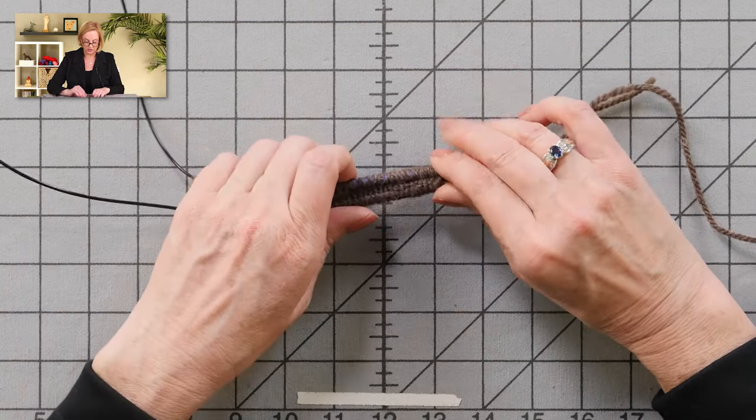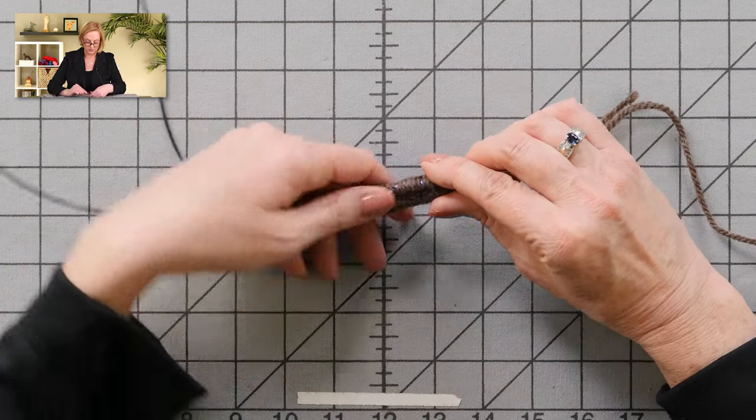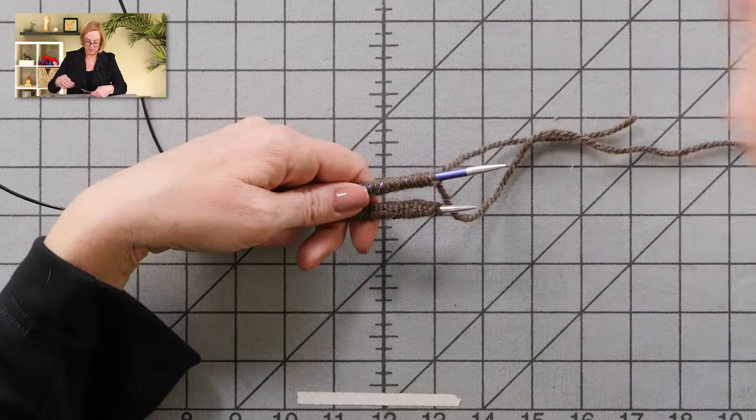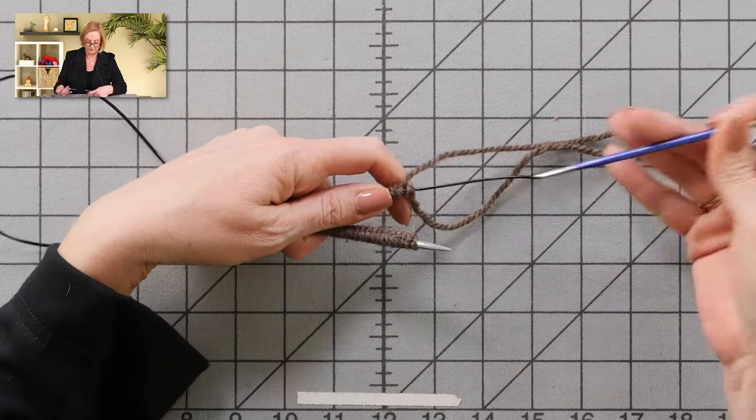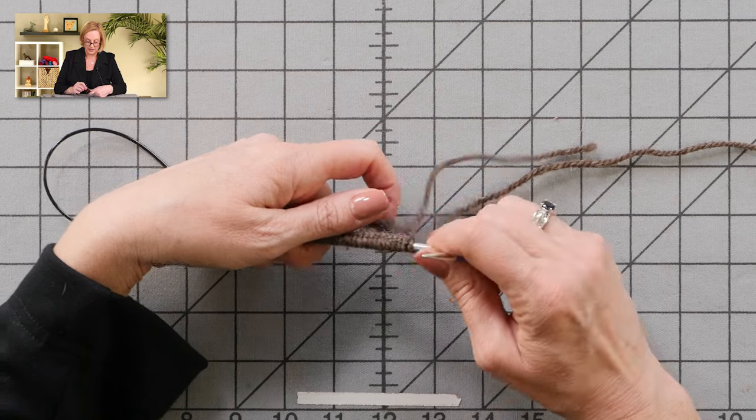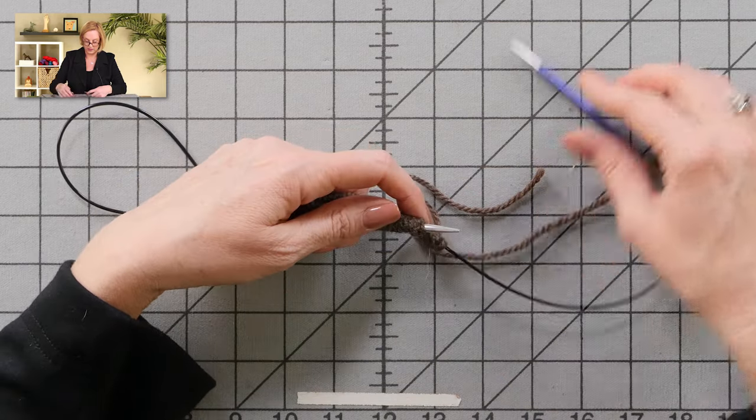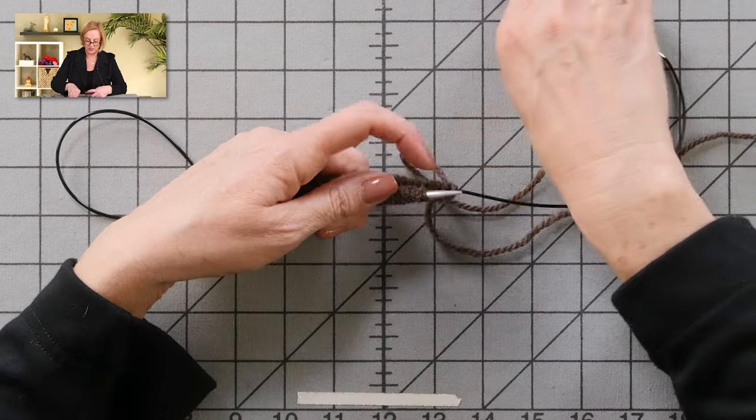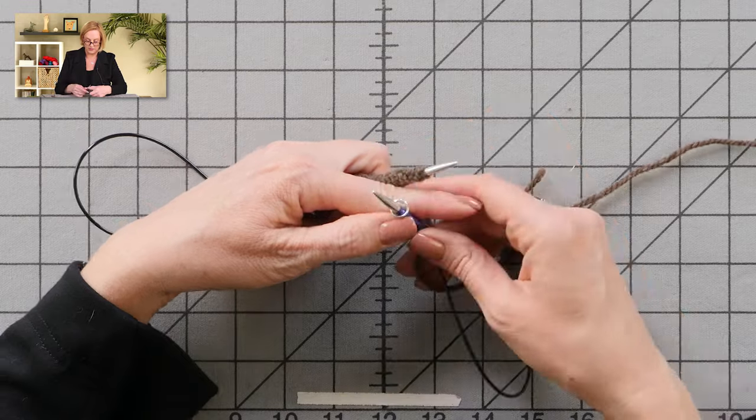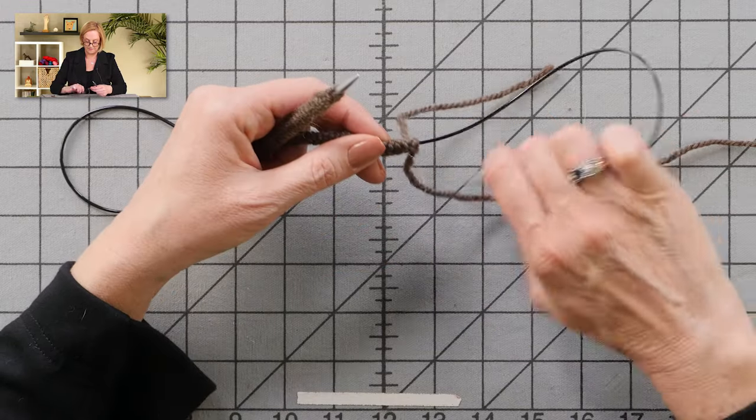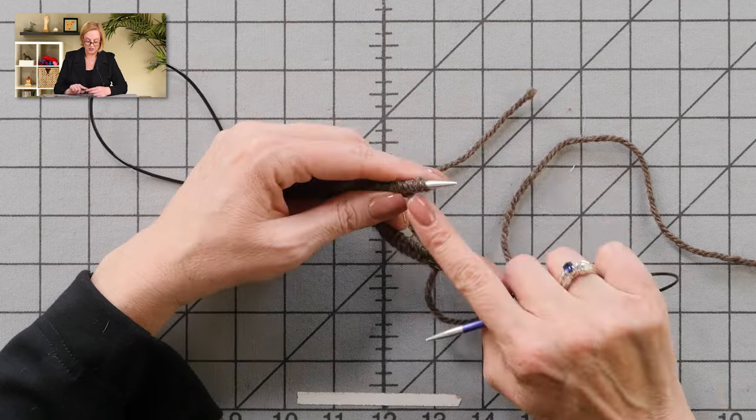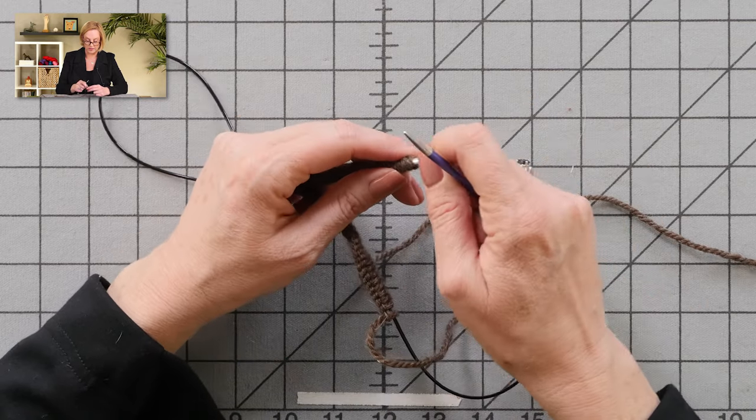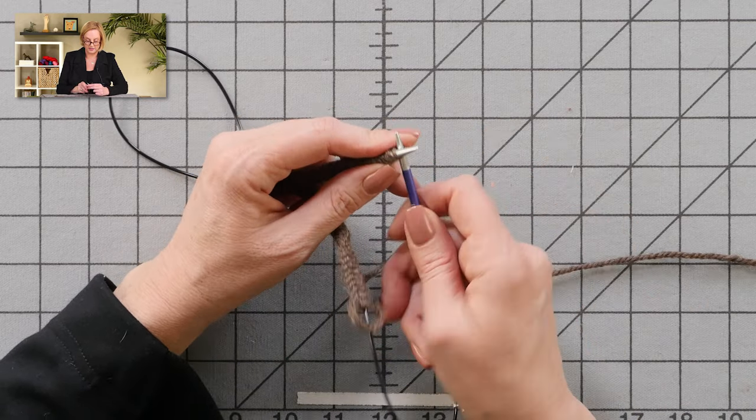So I am ready to go with joining this in the round. And so first thing I do is I pull the back needle long. And then I'm going to take a stitch marker and put that on the right needle. So my first stitch is here in my left hand, just like if I was knitting anything else that's not Magic Loop.